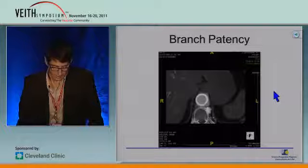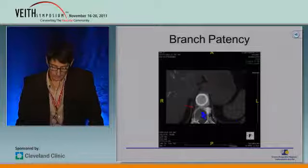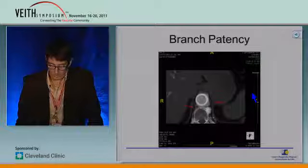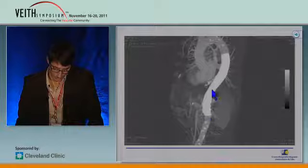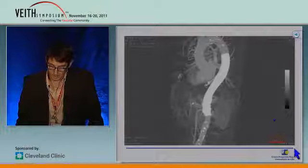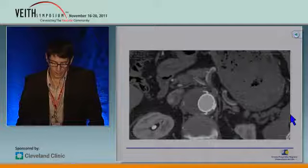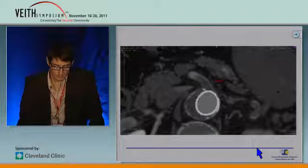Now, branch patency. You can see intercostal vessels staying patent, and obviously all visceral branches from the aorta remain patent because the aneurysm is still perfused. Look at this post-op image — you can see a patent celiac trunk and a patent SMA. This patient was treated in July 2010, and one month later the patient came back with an occluded celiac trunk and an occluded SMA.